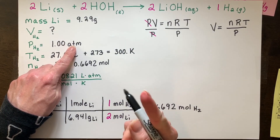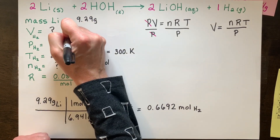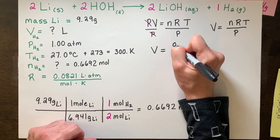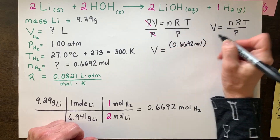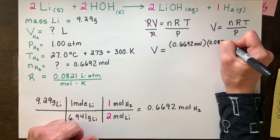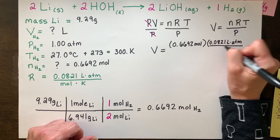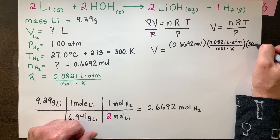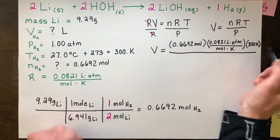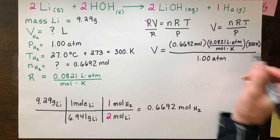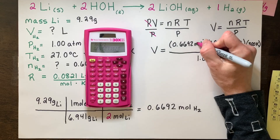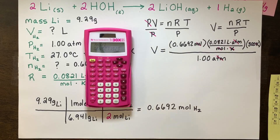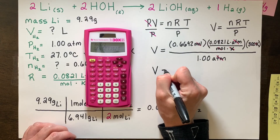So off we go to the volume calculation. Our moles is 0.6692 moles. R is 0.0821 liters·ATM per mole·Kelvin. Temperature is 300 Kelvin. And we divide by 1 ATM. Make sure your units all cancel — moles cancel, Kelvin cancels, ATM in the numerator and denominator cancel — so we do have liters as a surviving unit. So we should get an answer in liters.